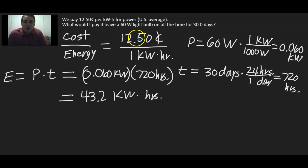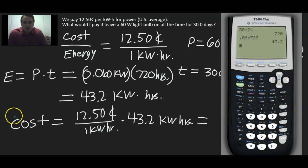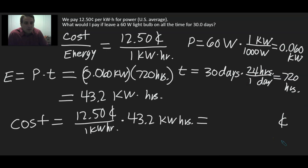And then finally, we know it costs this much, cost per energy. Here we have energy. So cost should equal the cost per energy times energy. That's 12.50 cents per 1 kilowatt hour times 43.2 kilowatt hours. And that should give us the cost in cents. So we need 12.5 multiplied by 43.2. So that's 540 cents.